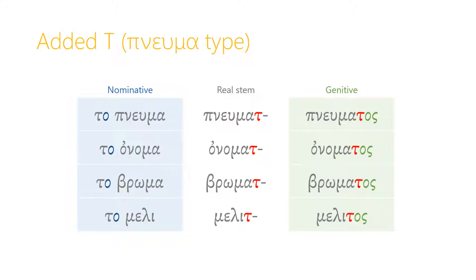There are many other third declension nouns with which, once we move outside the nominative case, something changes about the stem. These can be very confusing if we don't notice that there are patterns to them. One type of pattern is where we have the nominative form plus a tau at the end as the real stem. So one example is the noun to-pneuma, which means spirit, wind, or breath. The real stem isn't just pneuma — it's pneumat. And so the genitive form is pneumatos, and all other case forms will use that pneumat stem.